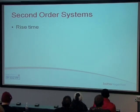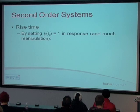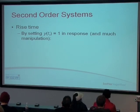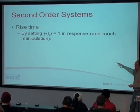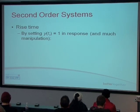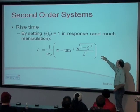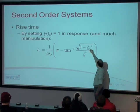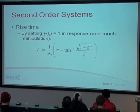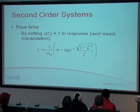To calculate the rise time, you set your response equal to your final value of one and then do lots of manipulation with the exponentials and sinusoids. You end up getting: T_R equals one over omega_D times pi minus the inverse tangent of the square root of one minus zeta squared over zeta. This gives you a value in seconds for the rise time. This equation is for an underdamped system, which is what we're going to focus on mostly.